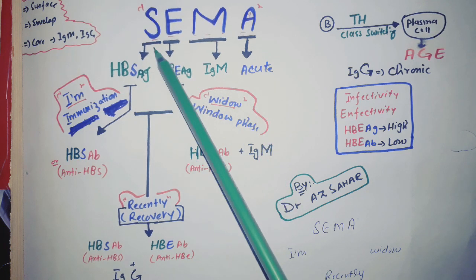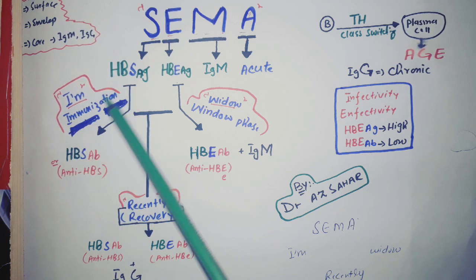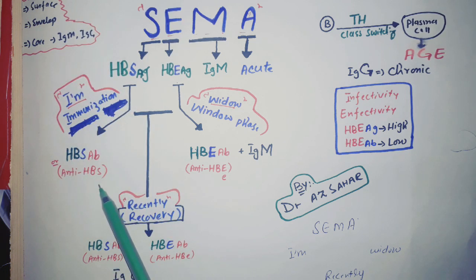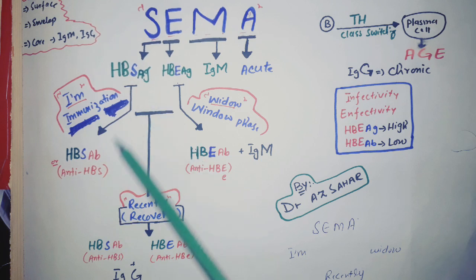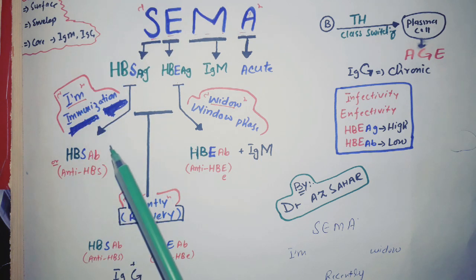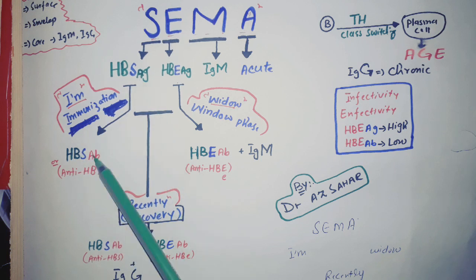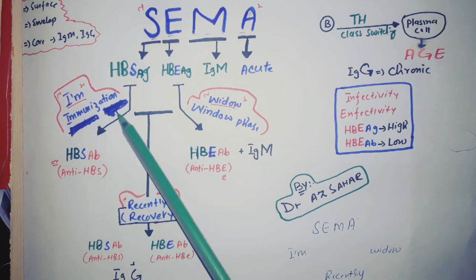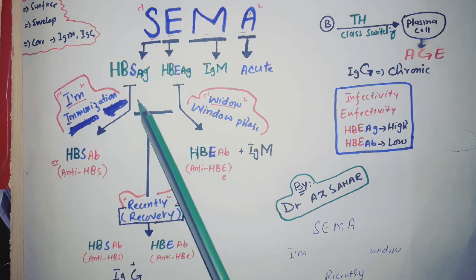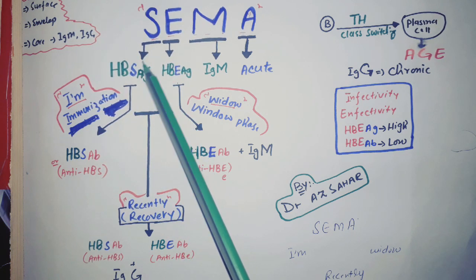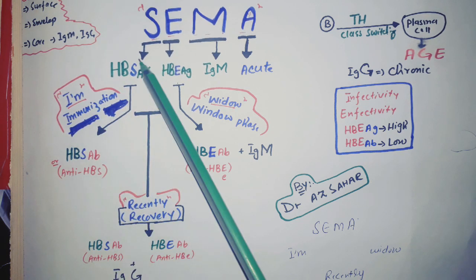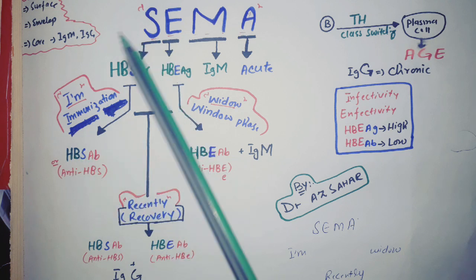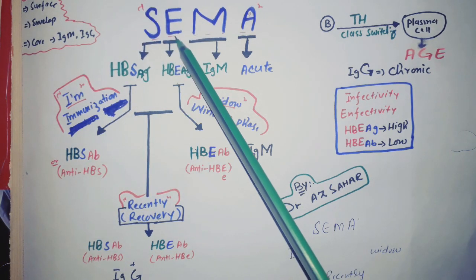If we produce antibodies to the S antigen, that means there is immunization, which is also called vaccination. So anti-HBS, or HBS antibodies, are the same thing. During immunization or vaccination, we only give the surface antigen, so the antibodies produced will only be anti-HBS — antibodies only to the surface antigen.